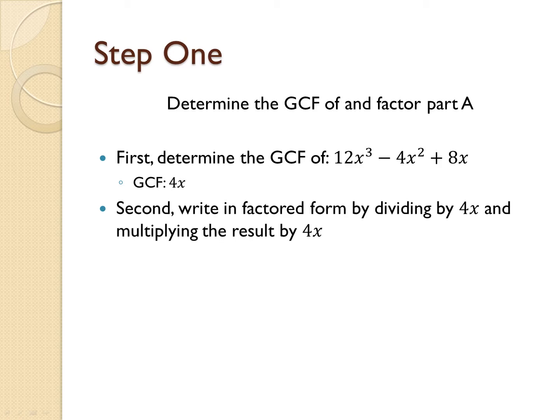So, next, we're going to write it in factored form and we're going to do this by first dividing everything by 4x. After we do this, we will see that our result is 3x squared minus x plus 2.